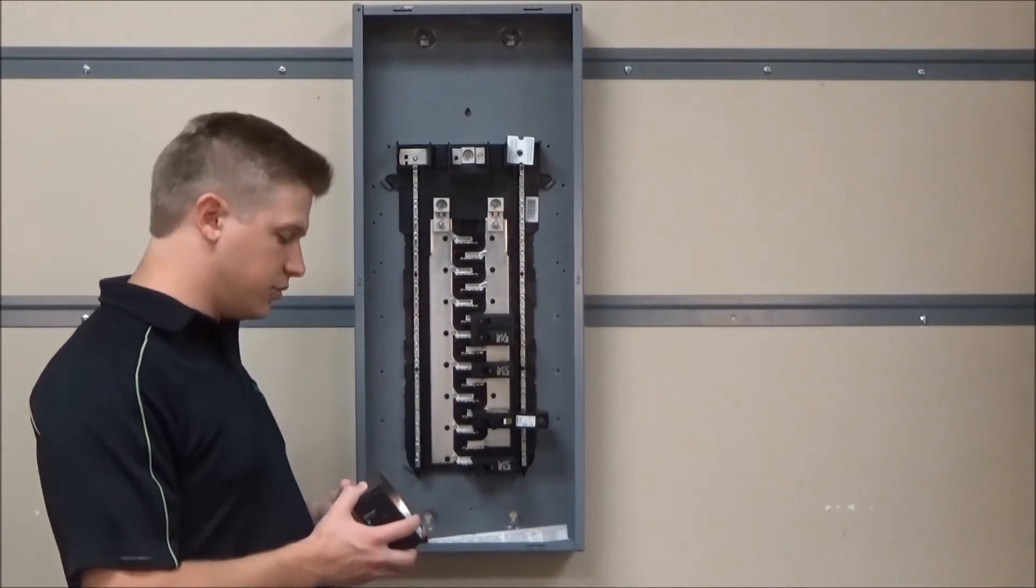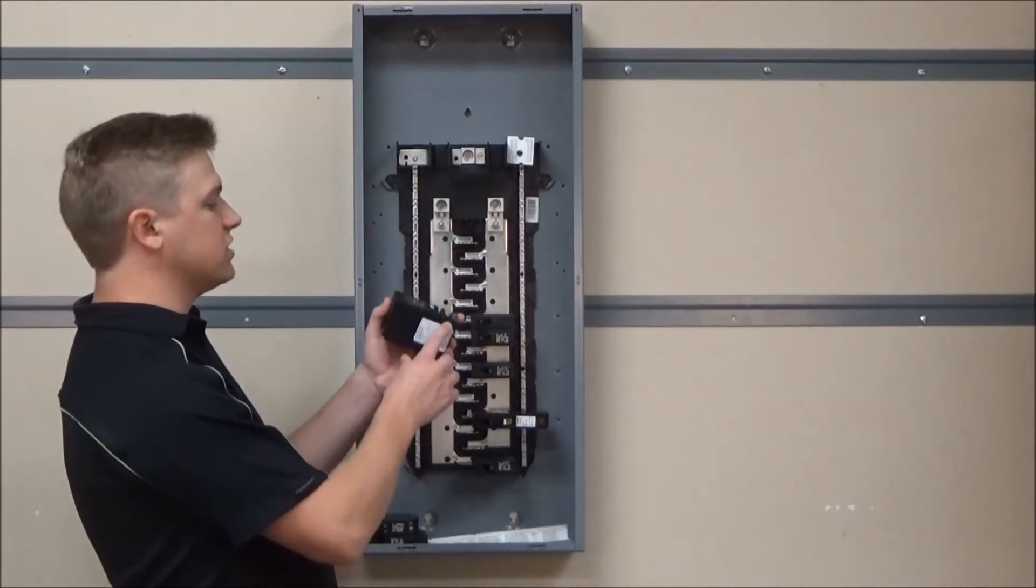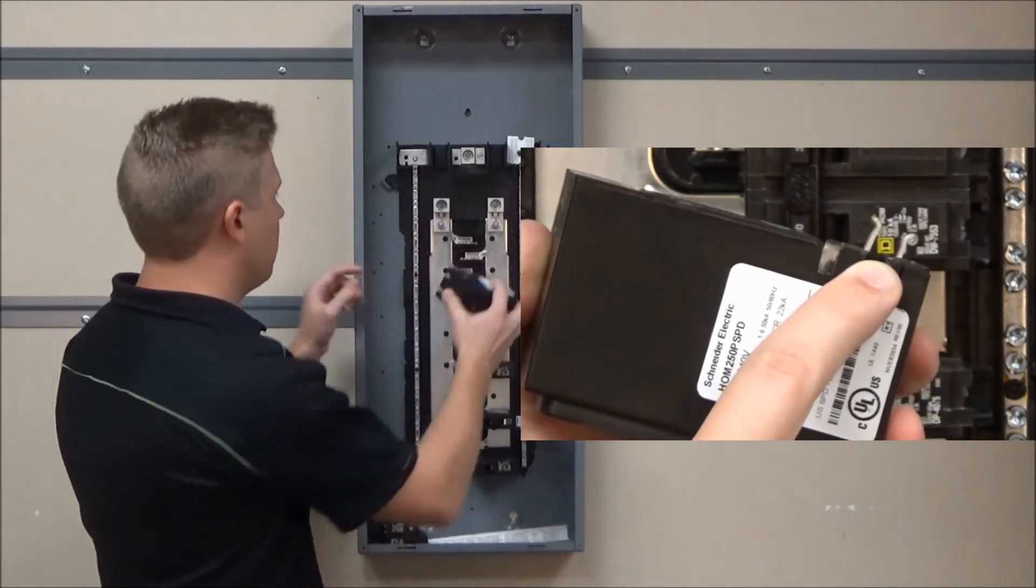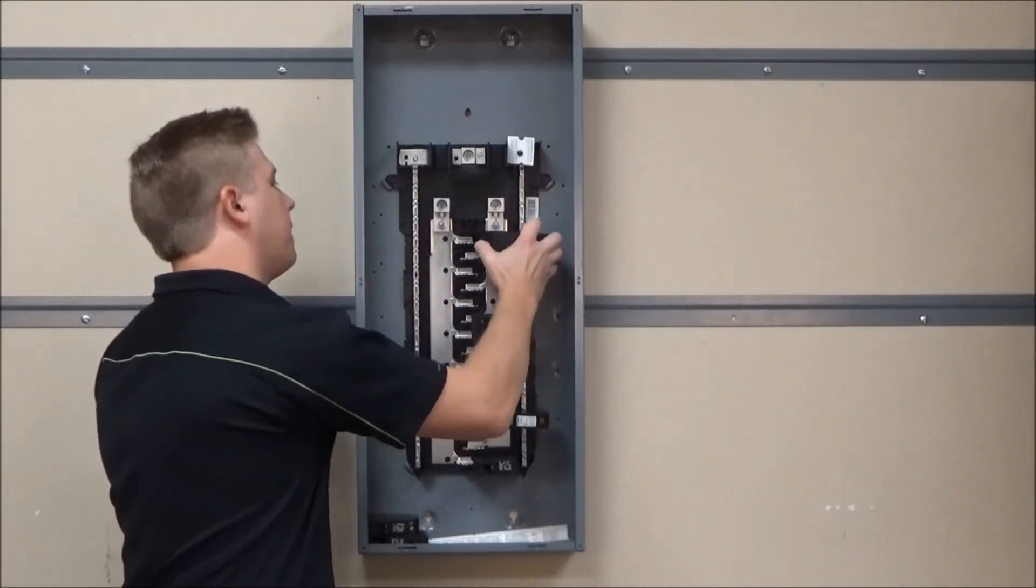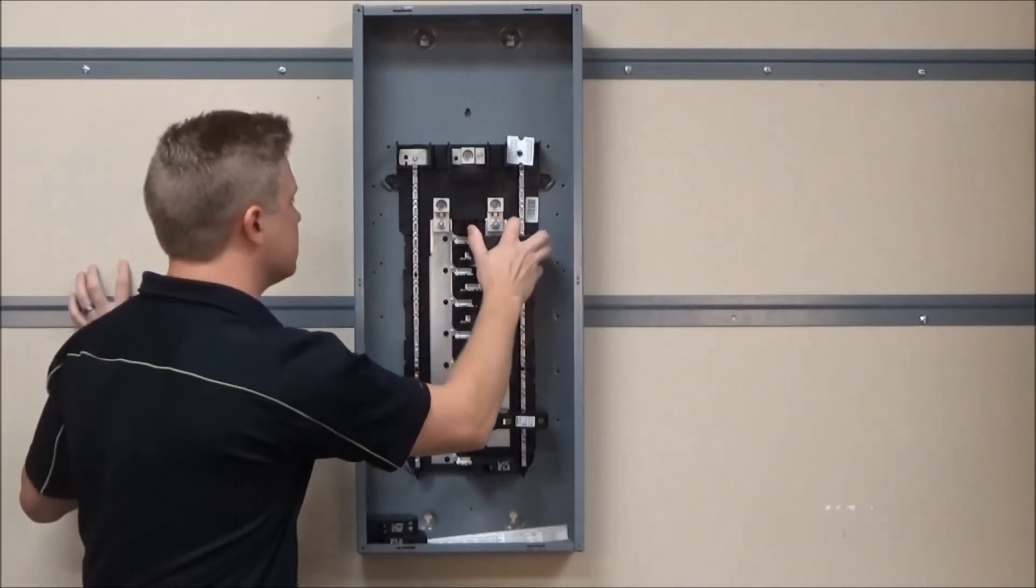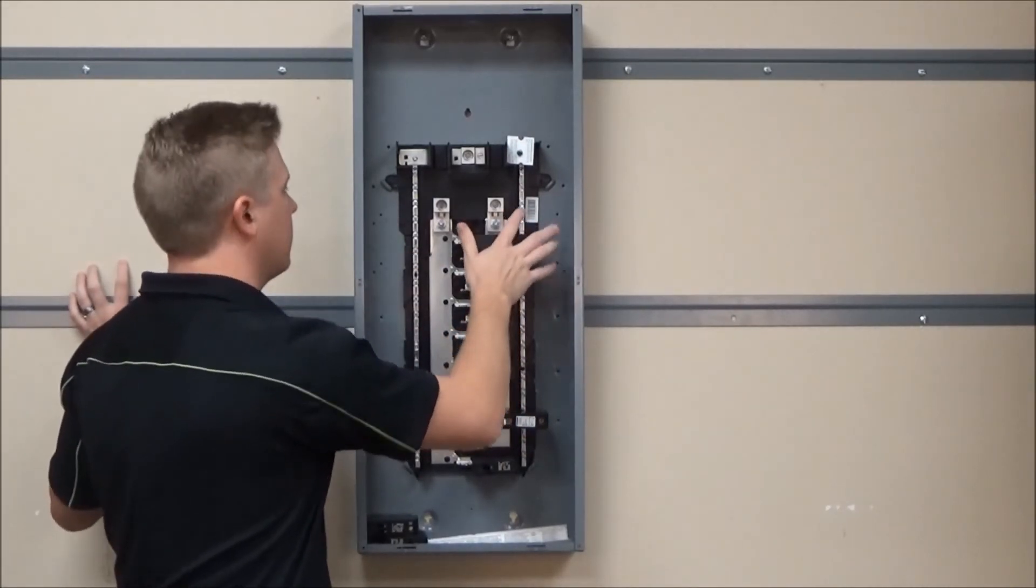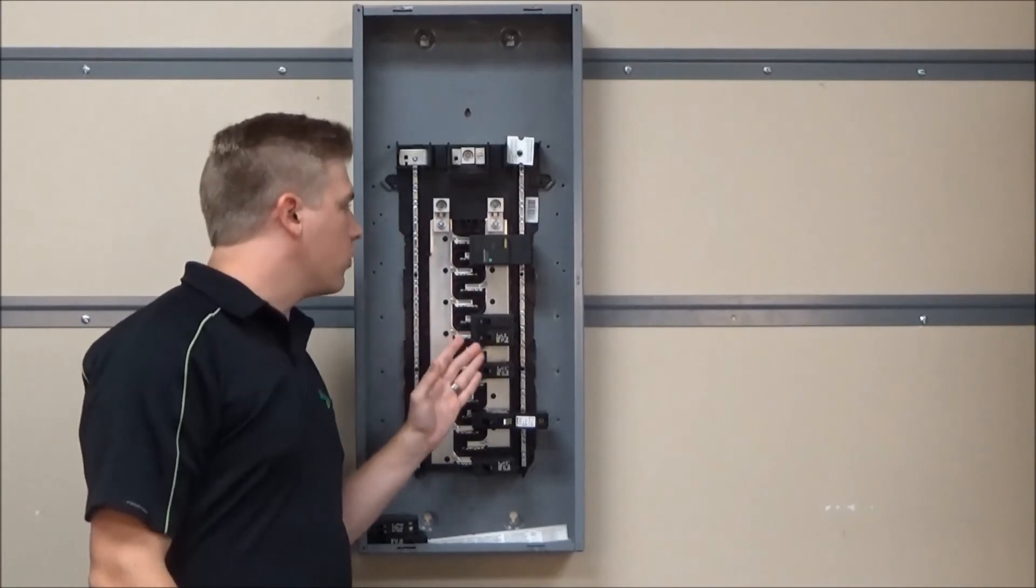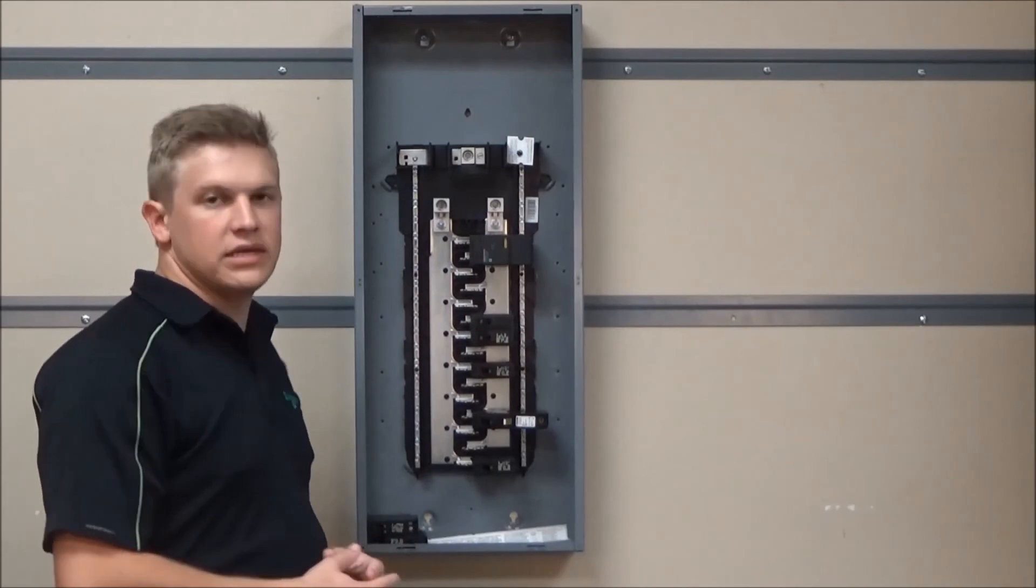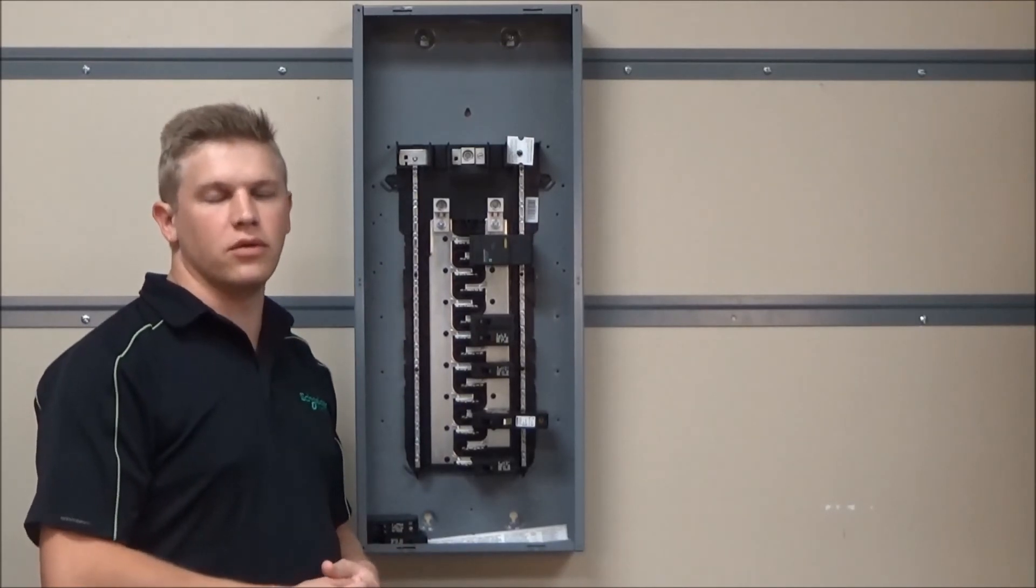So instead, you will attach this tab to the plug-on neutral bar and then rock the breaker forward until it seats into place. We recommend installing the surge protective device as close to the mains as possible in the equipment.